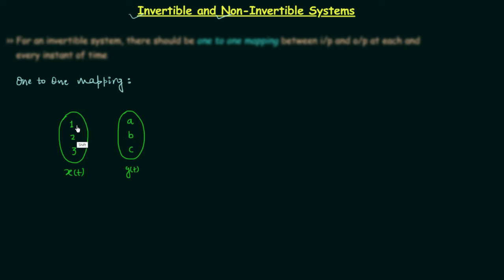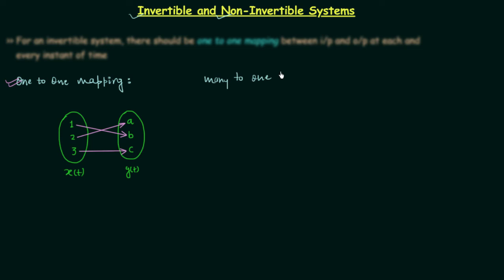Let's say when x(t) equals 1 the output y(t) equals a, and when x(t) equals 3 the output y(t) equals c. You can clearly see all three values of input are producing three distinct values of output. This particular mapping is known as one-to-one mapping. Now we will understand what we mean by many-to-one mapping.